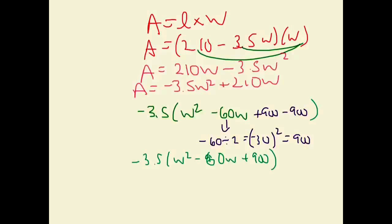Now, I would put negative 900 outside the brackets, but it's really negative 3.5 times negative 900. So what goes outside the brackets is actually 3,150.